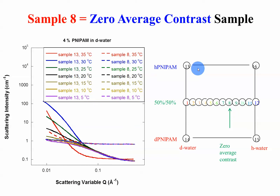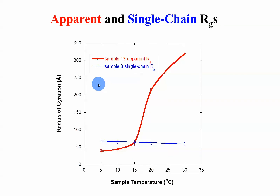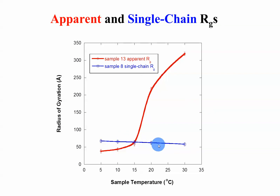Let's look at the scattering for sample 13 — pure D water — and sample 8 — the zero-average contrast condition. Sample 13 intensity goes up dramatically, while for sample 8 it's flat and doesn't change much, except when you get to the two-phase region. Already we see a big difference. It looks like we caught the zero-average condition rather well and we're seeing only single chains. Doing fitting to a single chain model with excluded volume, we see the single chain Rg goes down a little bit, while the apparent Rg goes up dramatically because it's catching inter-chain scattering.